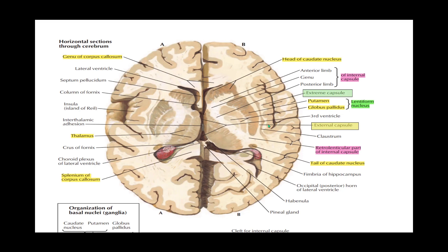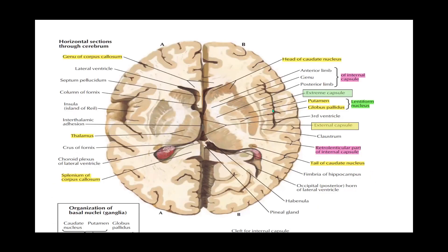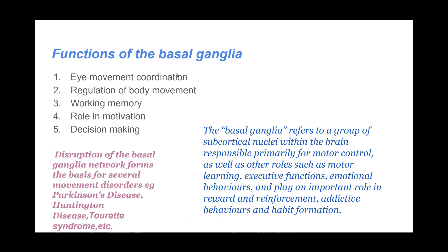The most important structure to know is the internal capsule. To summarize: we have the caudate nucleus, the lentiform nucleus comprising the putamen and globus pallidus, the tail of the caudate nucleus, and the claustrum — all key components of the basal ganglia.